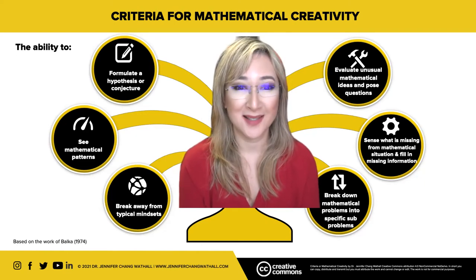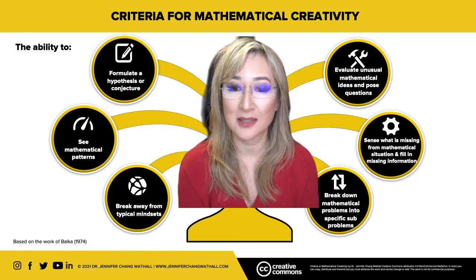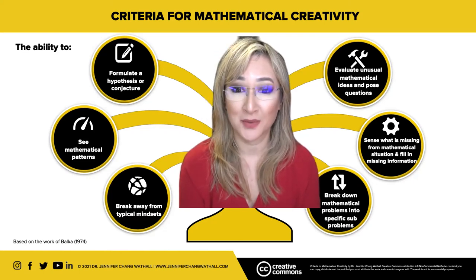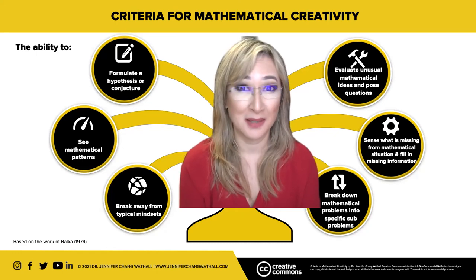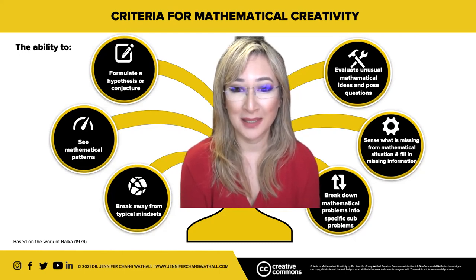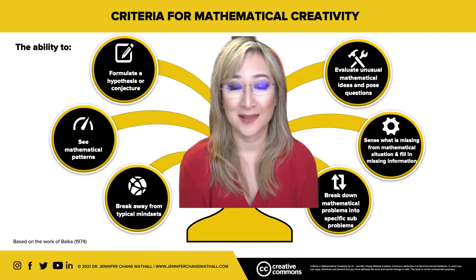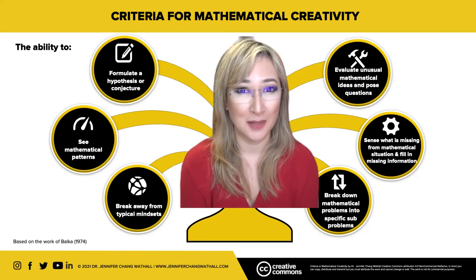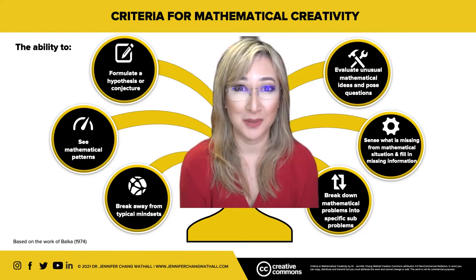My next mathematical creativity criteria is the ability to sense what is missing from a mathematical situation and to be able to fill in the missing information. So again, it's not about just a right and wrong answer, but being able to really look at a mathematical problem and think of the steps or the pathways or the information that we need in order to be able to solve that particular problem.